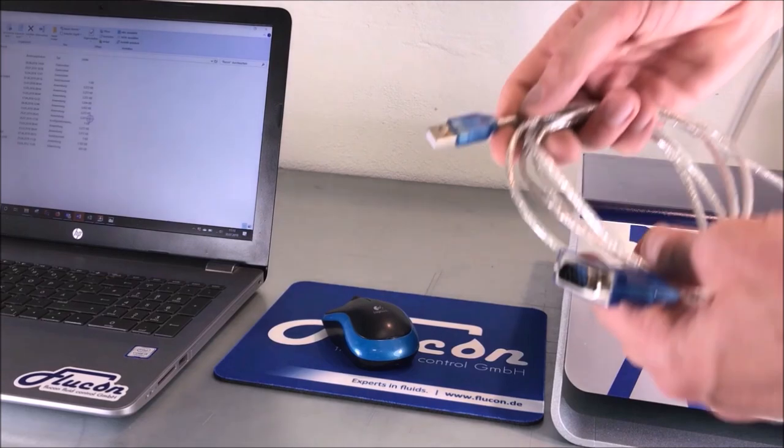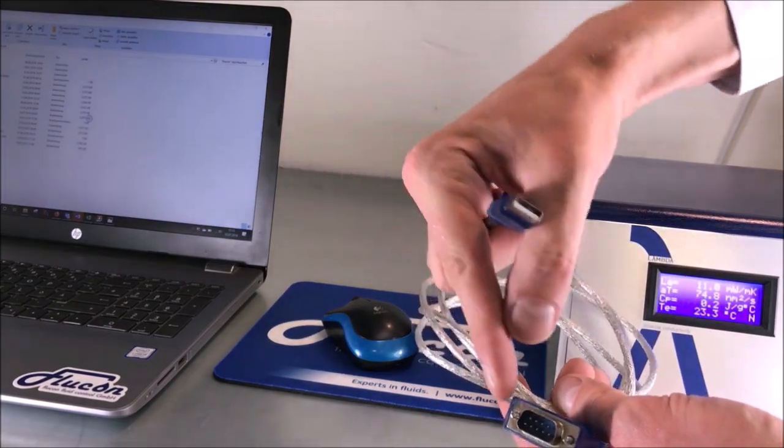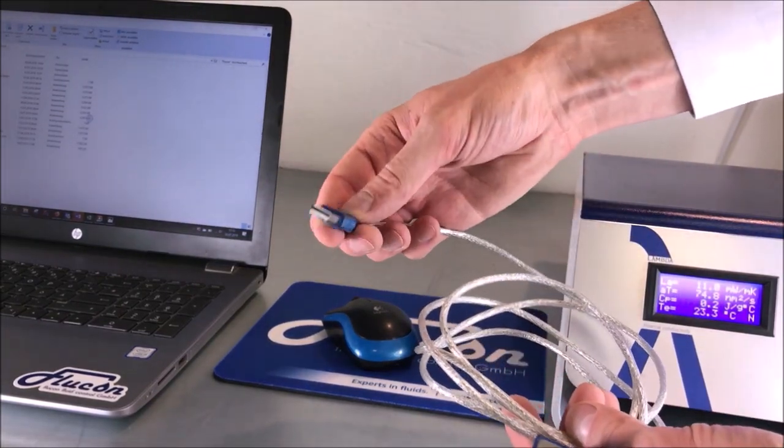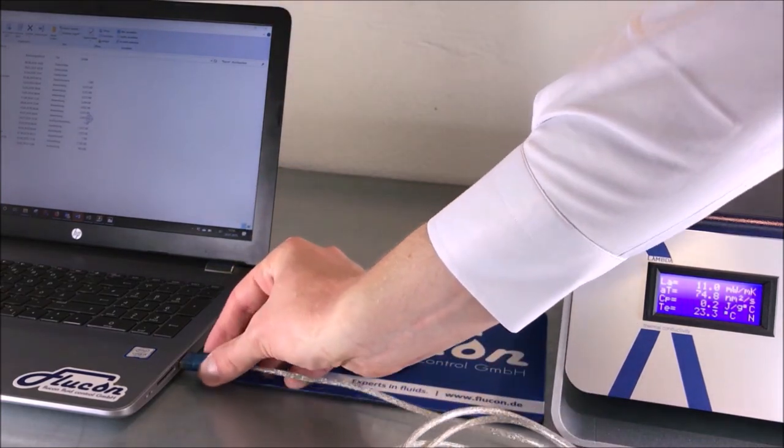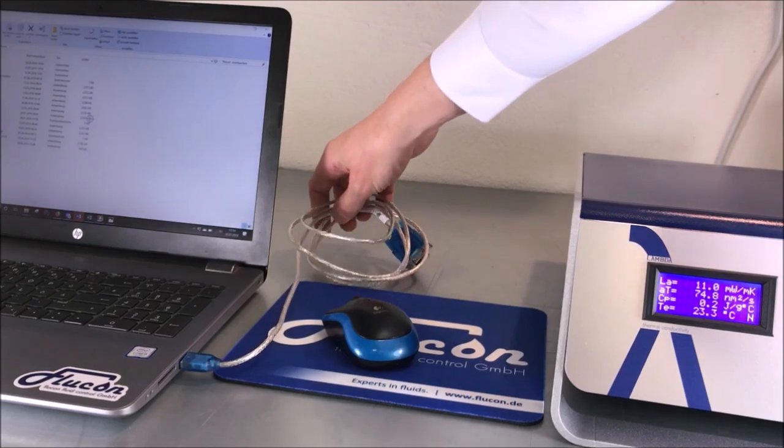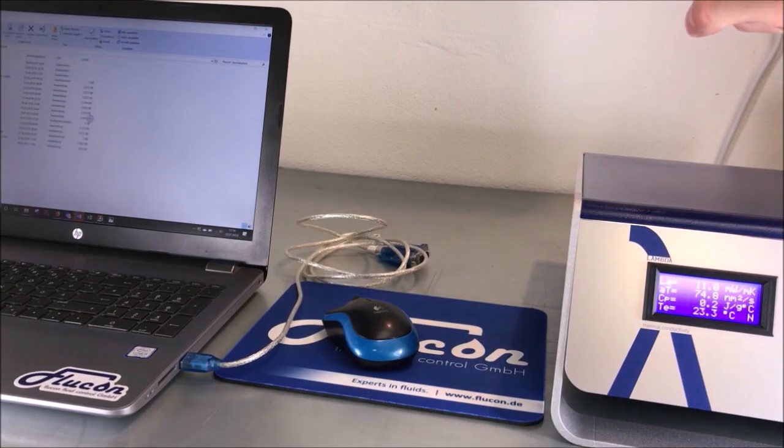If your computer or laptop doesn't have a serial port, you can use the serial to USB connector for adaptation. Make sure that you plug it into the USB port of your computer first and that its driver was installed correctly before connecting the Lambda.